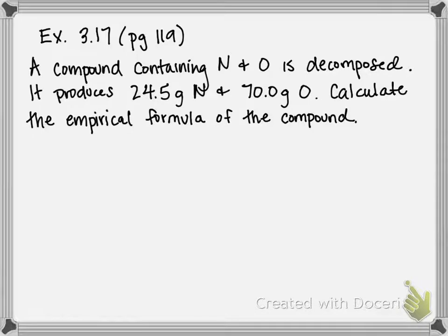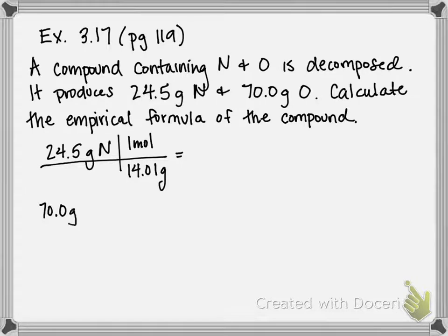So nitrogen, 24.5 grams, we divide that by its molar mass which is 14.01 grams per one mole. And then for oxygen it's going to be 70 grams oxygen divided by 16.00 grams per mole.